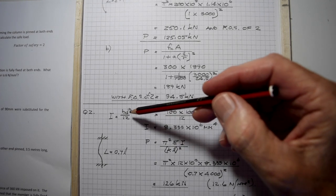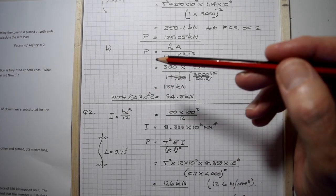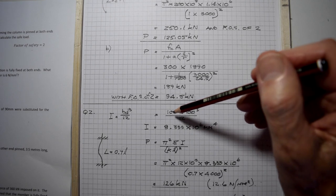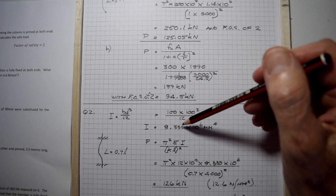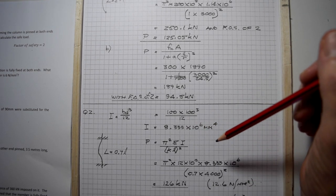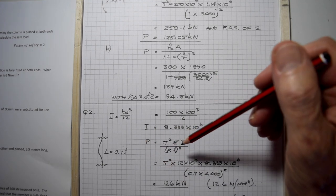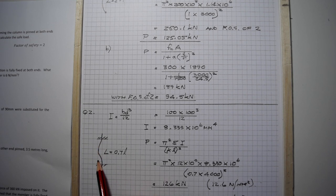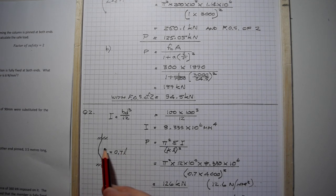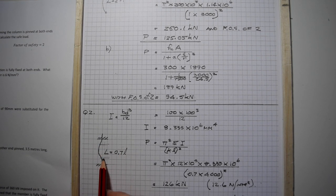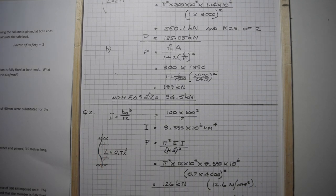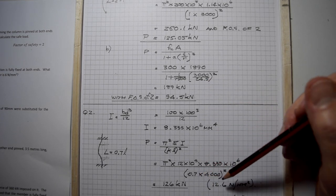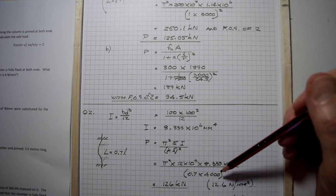The I for the square section is bd cubed over 12, which gives a moment of inertia of 8.333 times 10 to 6 millimeters to the fourth. The effective length from the table is 0.7 times the actual length of four meters all squared.